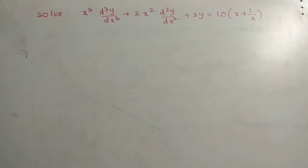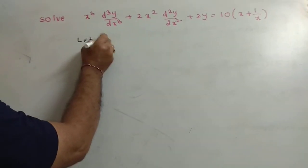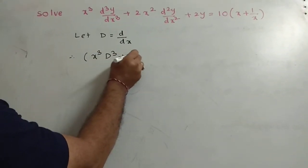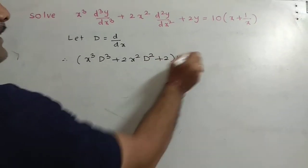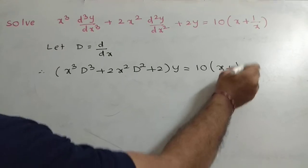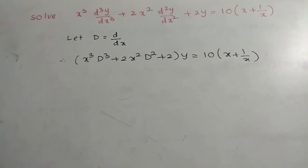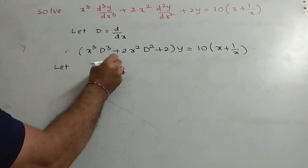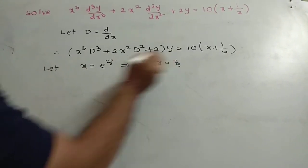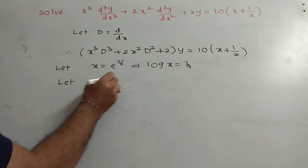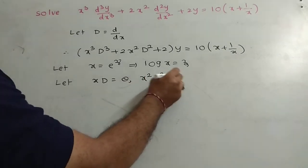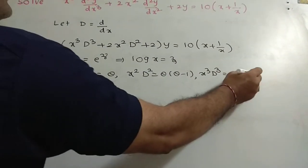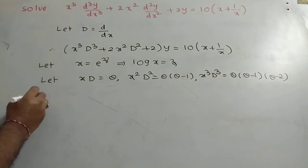First, write it in symbolic form where D stands for d/dx: (x³D³ + 2x²D² + 2)y = 10x + 1/x. To apply the Cauchy-Euler method, let x = e^z, so log x = z. Introduce: xD = θ, x²D² = θ(θ-1), and x³D³ = θ(θ-1)(θ-2). Now substitute these values into the equation.